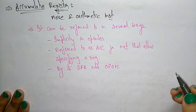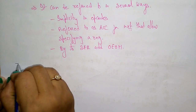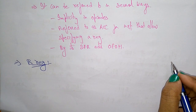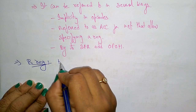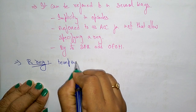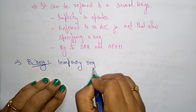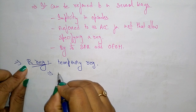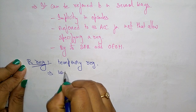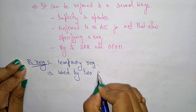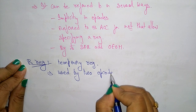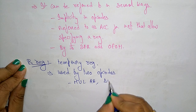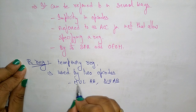Next is the B register. It commonly acts as a temporary register and is used by two opcodes: MUL AB and DIV AB — that is, for multiplication and division operations.